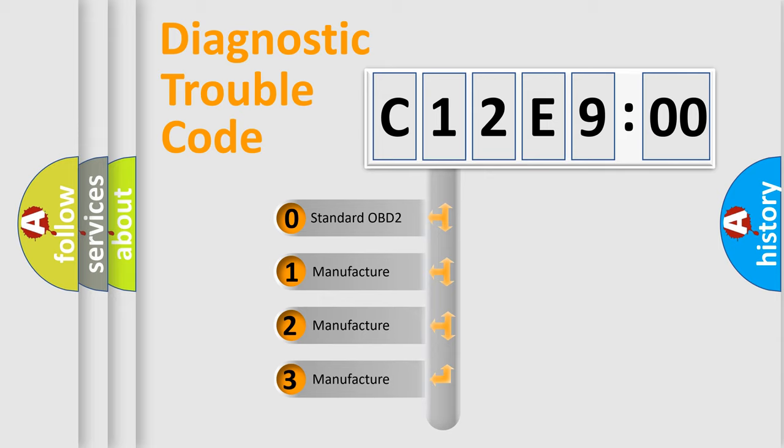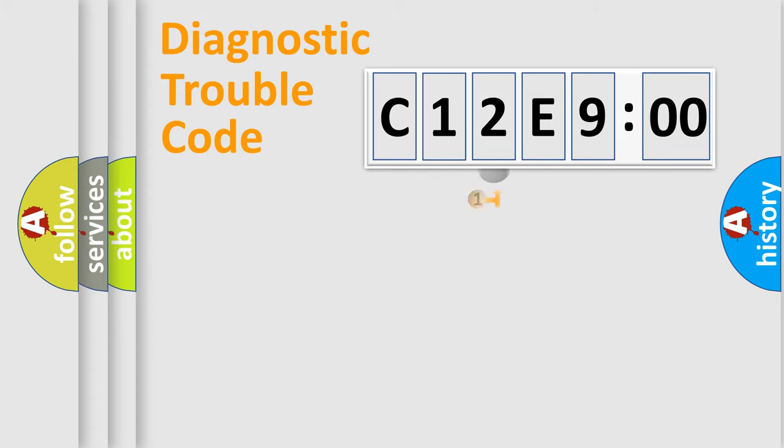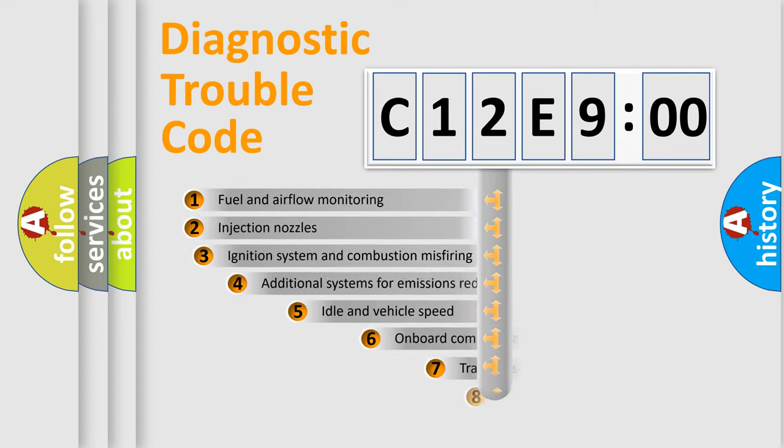If the second character is expressed as zero, it is a standardized error. In the case of numbers 1, 2, 3, it is a manufacturer-specific expression of the car-specific error.